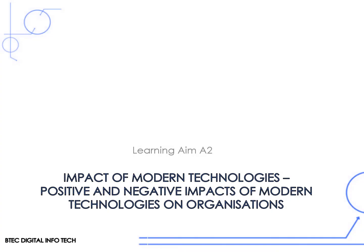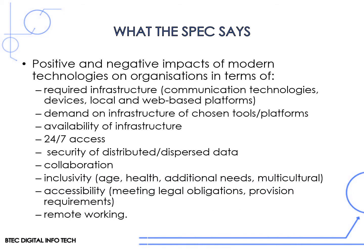This video is for learning game A2 - the impact of modern technologies, focusing on the positive and negative impacts of modern technologies on organizations. The specification says we need to cover quite a bit of information here, including required infrastructure, demand on infrastructure, availability of infrastructure, 24/7 access, security of distributed or dispersed data, collaboration, inclusivity, accessibility, and remote working.